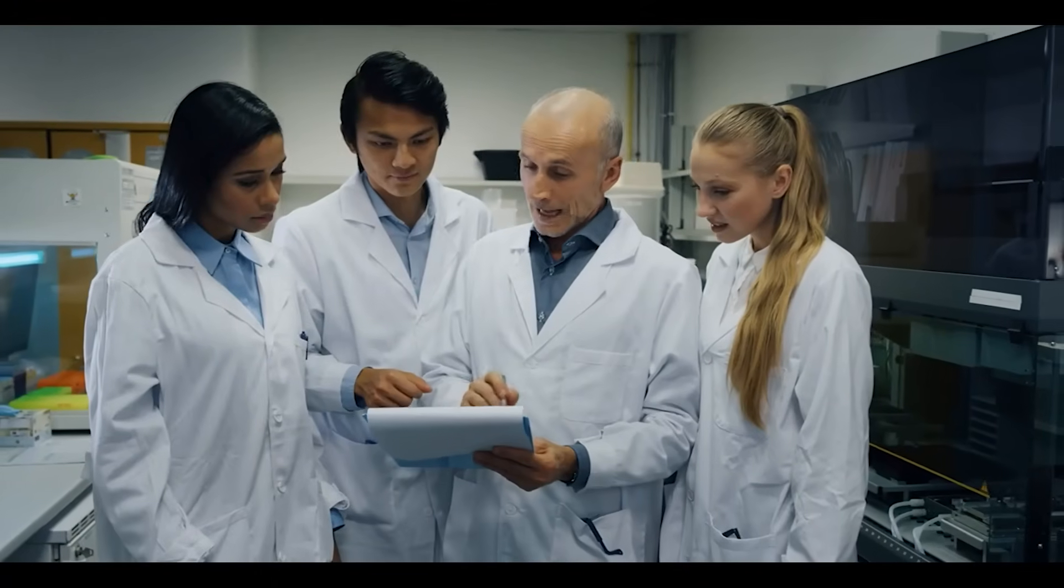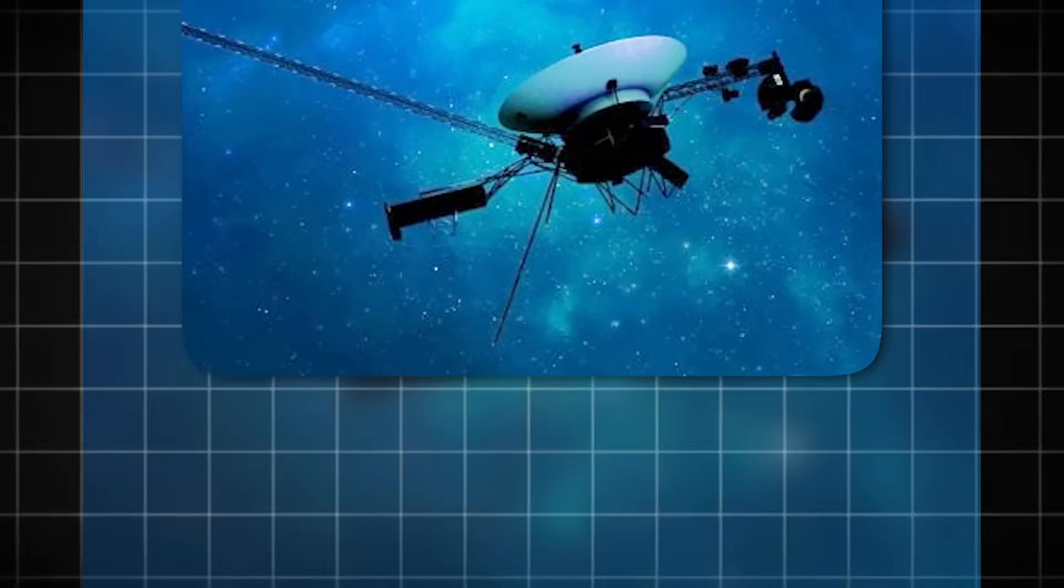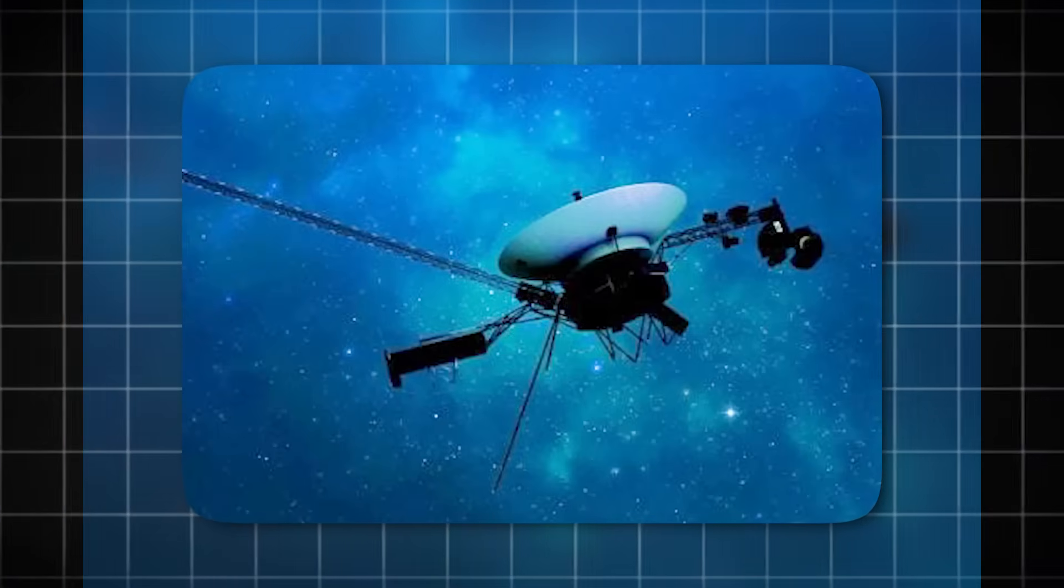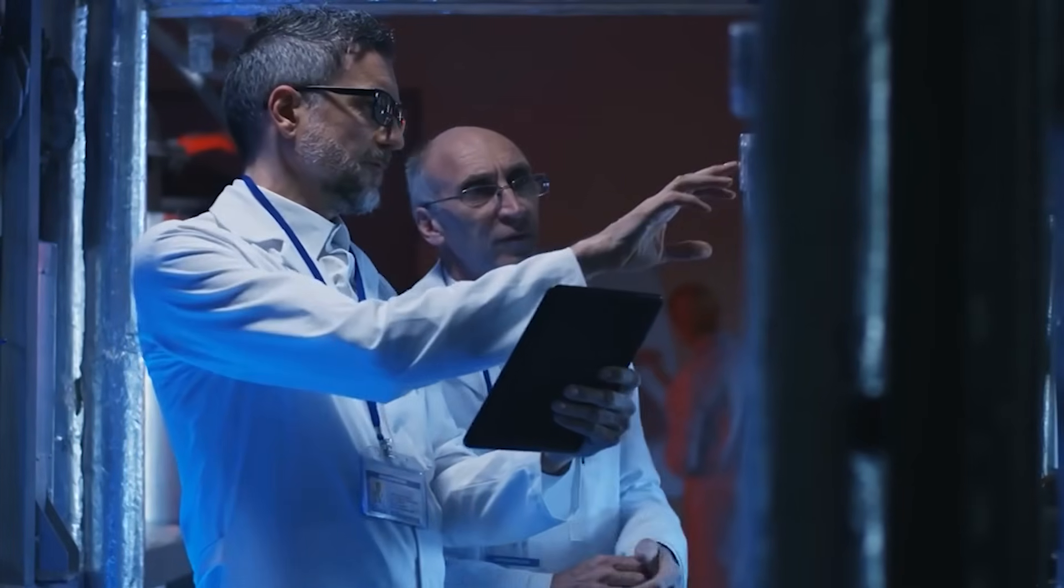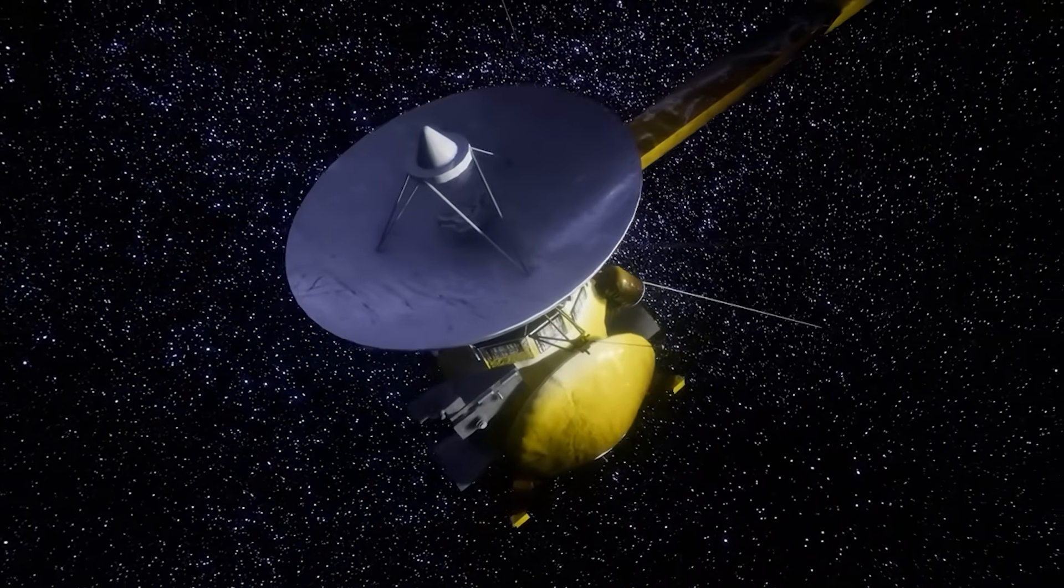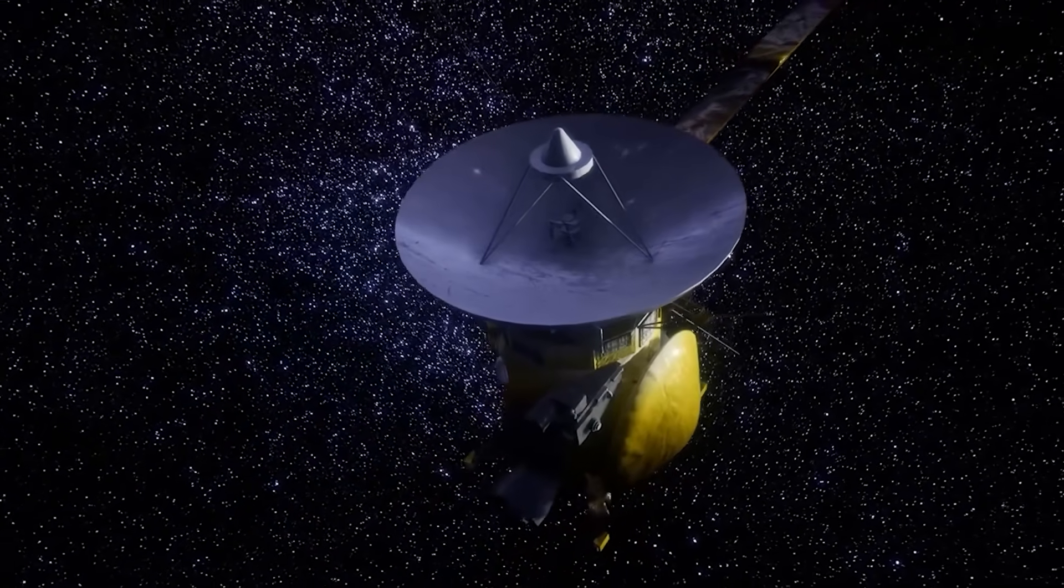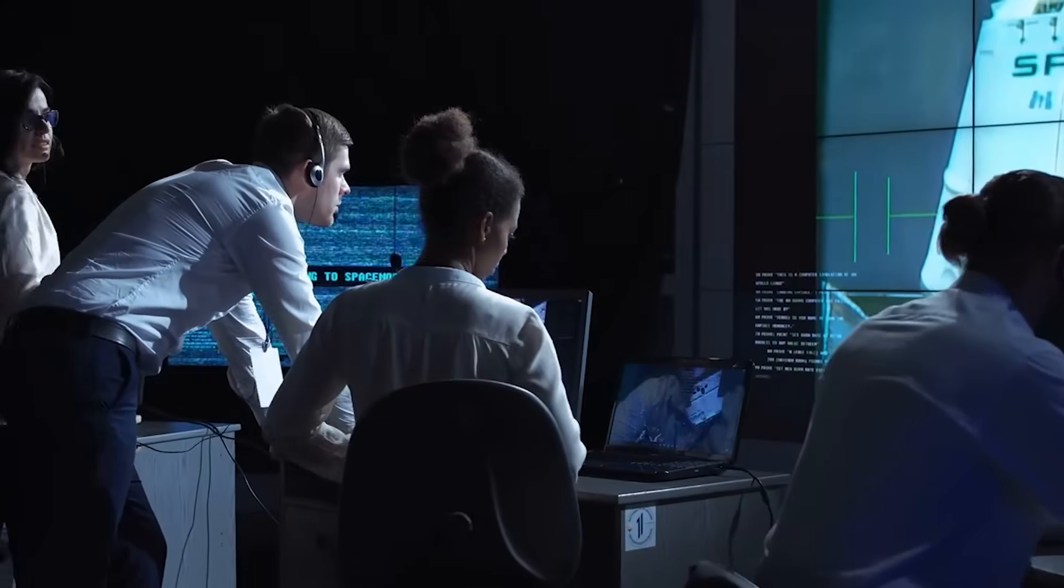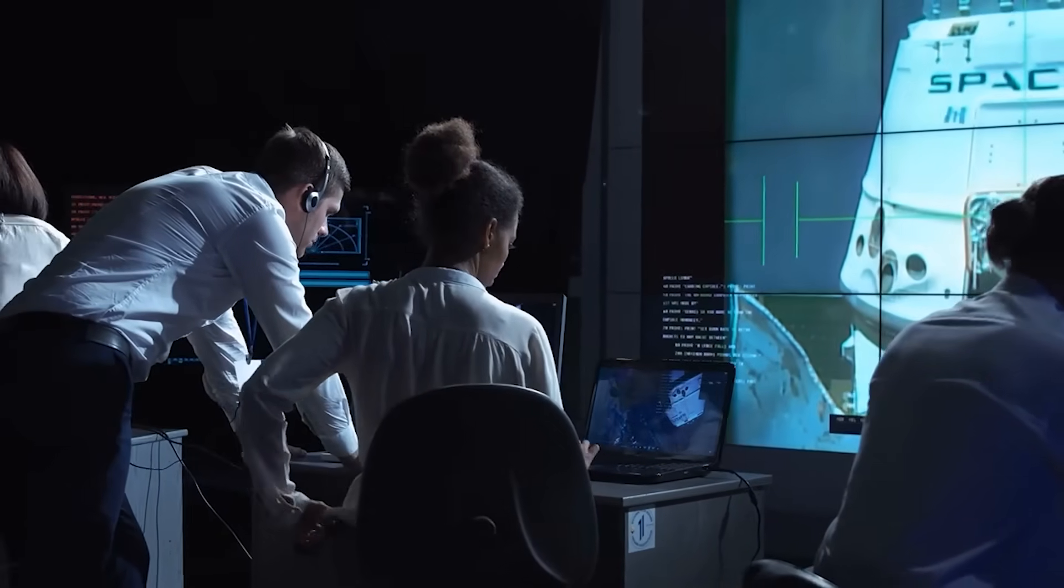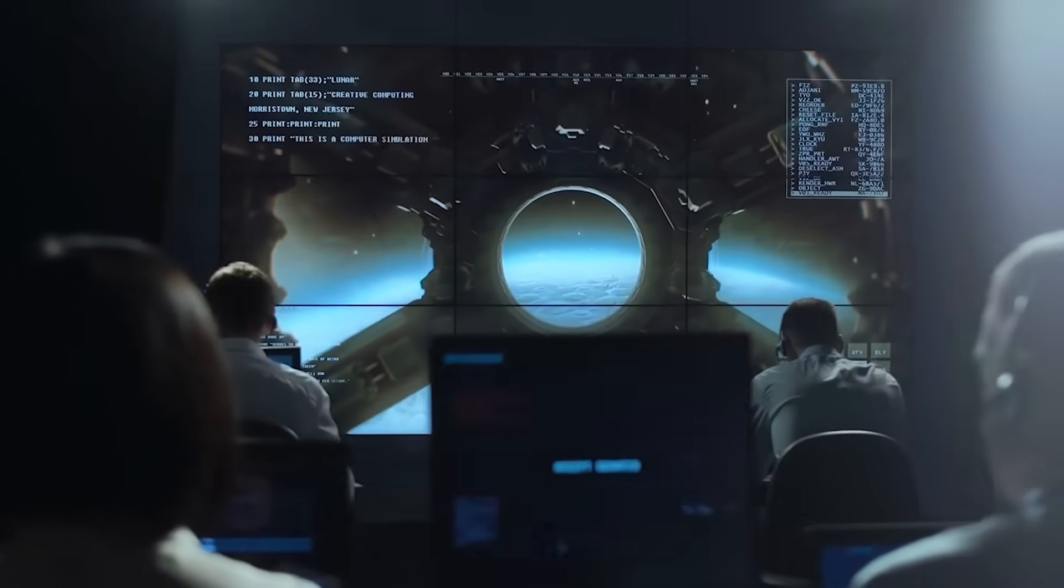Moreover, the discovery reignites discussions about what else might be out there in interstellar space. Voyager one was never designed to explore these regions in detail. It was an emissary sent out to deliver a snapshot of humanity to the stars. Its scientific instruments were not tailored for deep interstellar exploration, and yet they have captured something entirely new. This raises a tantalizing possibility. If Voyager one can detect these phenomena with limited tools, what could a future mission purpose-built for interstellar study uncover?